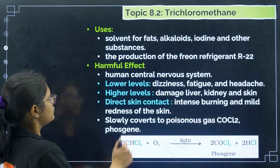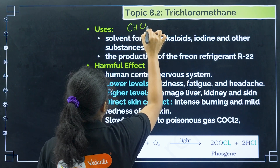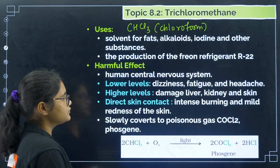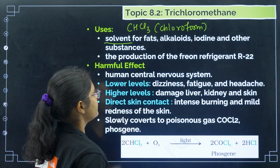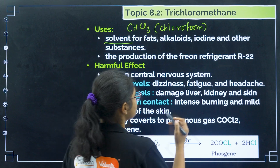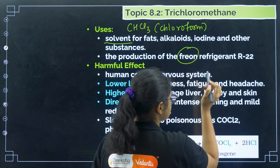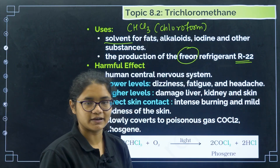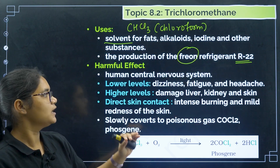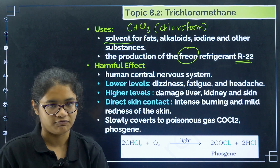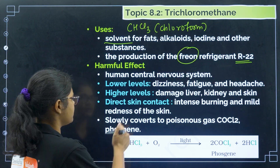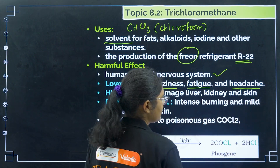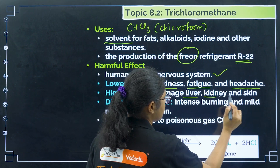Next is trichloromethane, CHCl₃ — the common name is chloroform. It is also often used as a solvent for fats, alkaloids, iodine, and other substances. It is also used for the production of freons — specifically in the preparation of refrigerant R22, for which chloroform is needed. The harmful effects: it also affects the central nervous system. At a lower level, you generally feel dizziness, fatigue, and headache. At a higher level, it can damage the liver, kidney, and skin. Direct skin contact causes intense burning and mild redness.